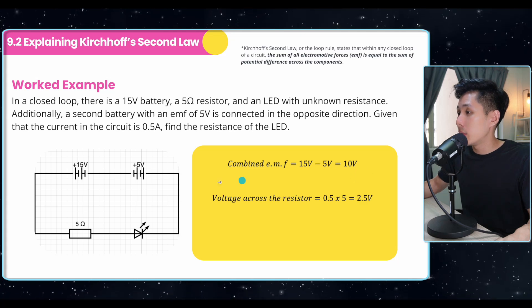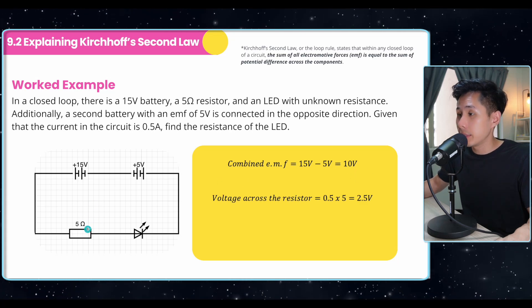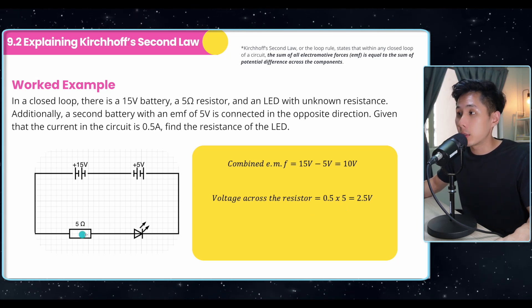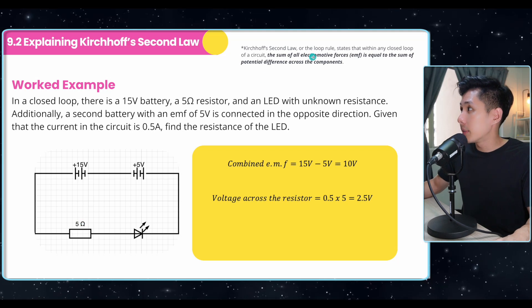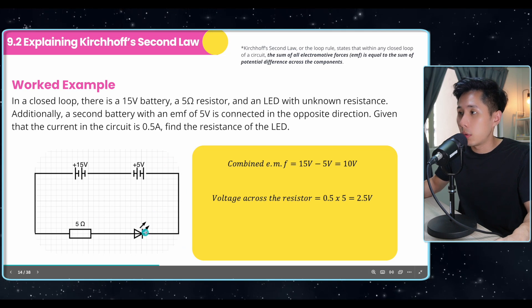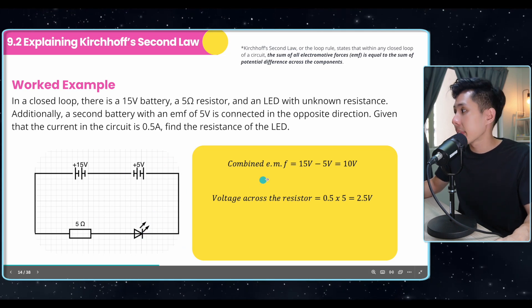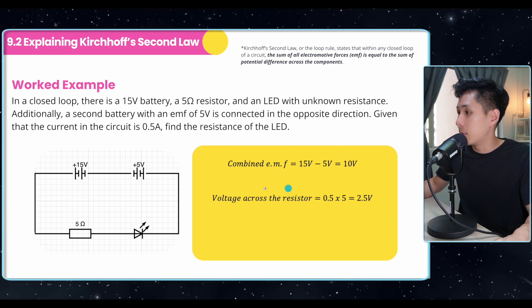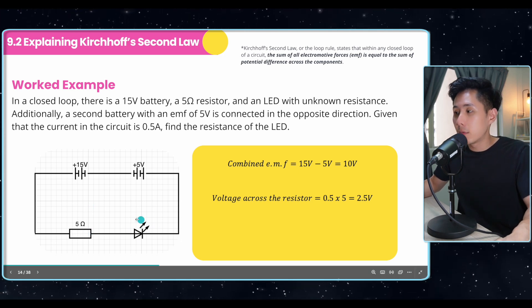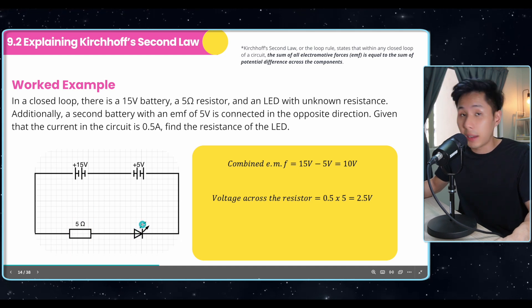And then we also have to know the voltage across this resistance. And we can calculate that using the current multiplied by the resistance, which will give us the voltage. We know that Kirchhoff's second law states that the sum of potential difference across each component must be equal to the source. And the source is 10. And the voltage across this resistor is 2.5. It means that the voltage across the LED will be 7.5.